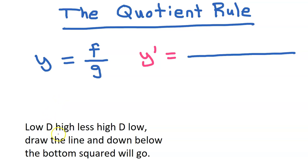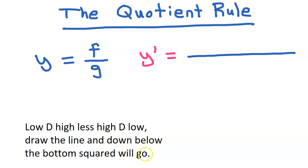I'm going to use this little poem to help us remember the quotient rule. Every time I say d, that means the derivative. So you could say: low d high, less high d low. Draw the line, and down below, the bottom squared will go.